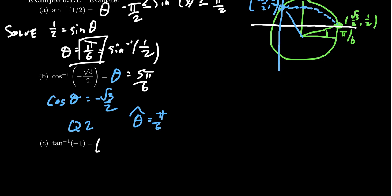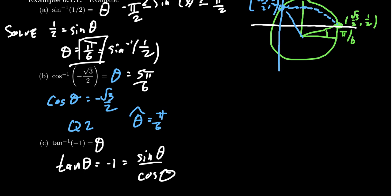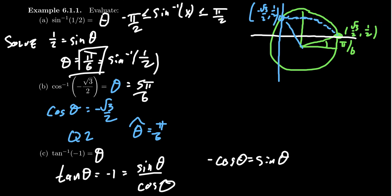If we compute tangent inverse of negative one, think of this as an angle. We're looking for the angle θ such that tangent equals negative one — remembering that tangent is sine over cosine. Arc tangent is always between −π/2 and π/2, not including those endpoints, because those correspond to asymptotes. In the first or fourth quadrant, if sine and cosine have different signs, that's the fourth quadrant. That's a 45-degree angle in the fourth quadrant, giving us negative 45 degrees, or −π/4.